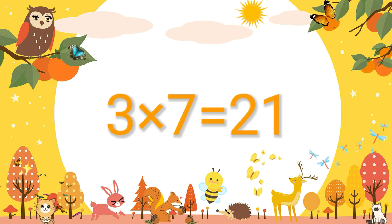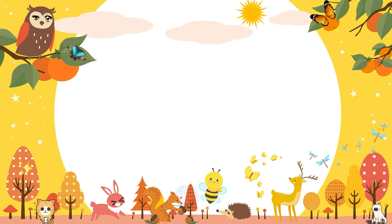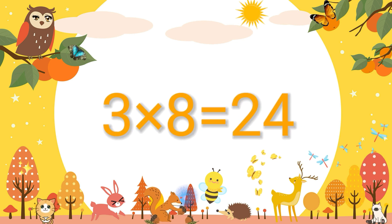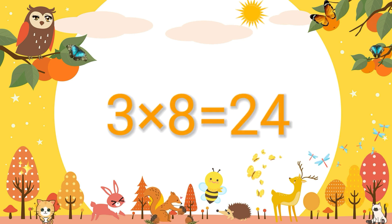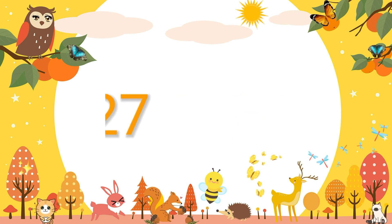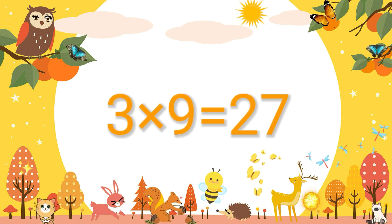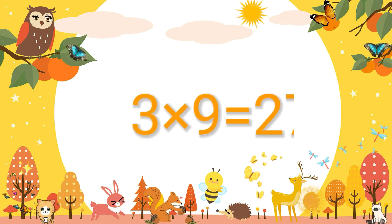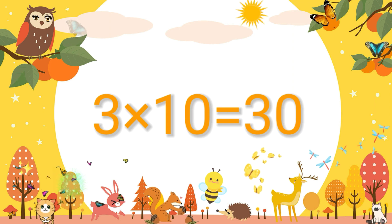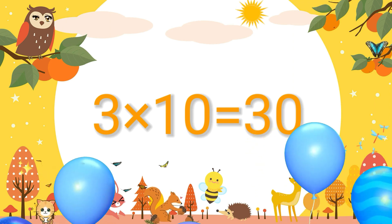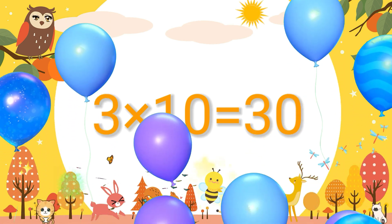3 7's are 21. 3 8's are 24. 3 9's are 27. 3 10's are 30.